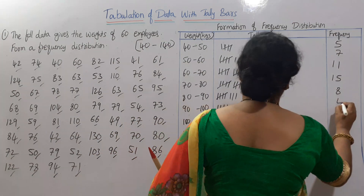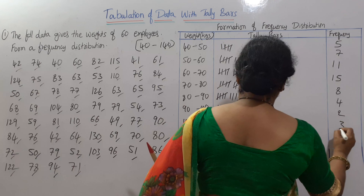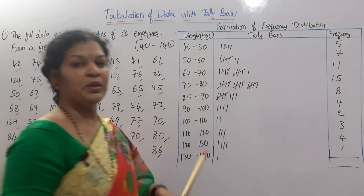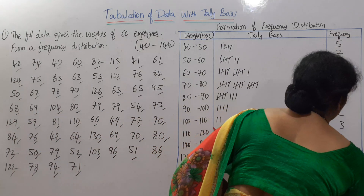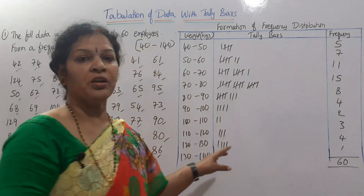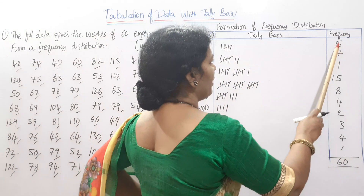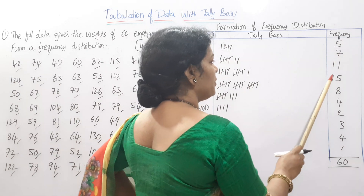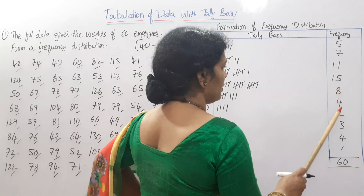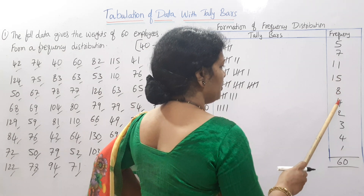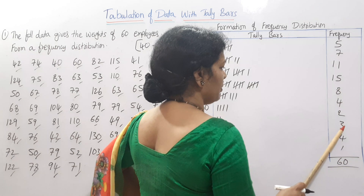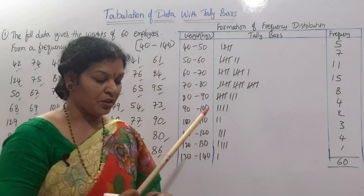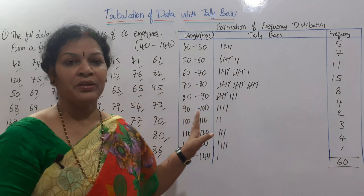Now we total the frequencies. The total must be 60; if it is 60, we have not missed anything. Let's calculate: 5 plus 7 is 12, plus 11 is 23, plus 9 is 32, plus 10 is 42... arriving at a total of 60. Correct — we got 60. That is the way to prepare the frequency distribution table.